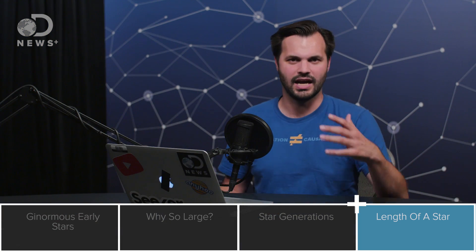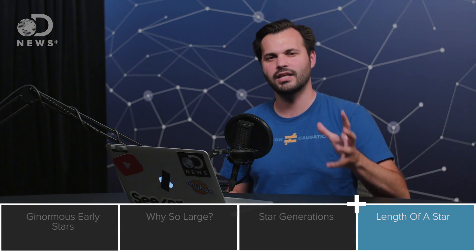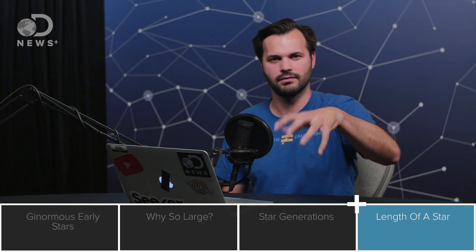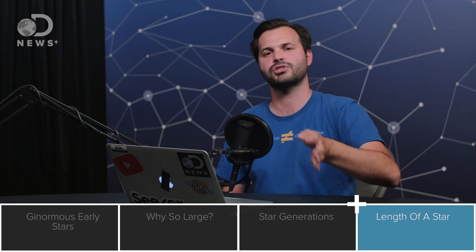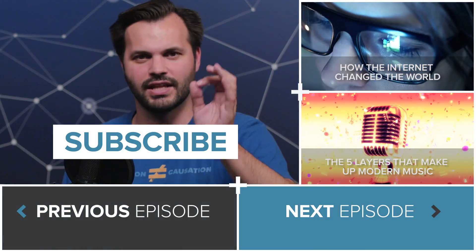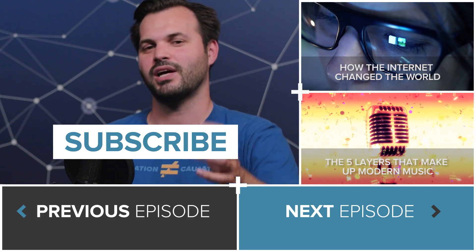Eventually everything is going to die, even stars. So now that you know how they're born and how to pull them together into different types over the life cycle of our universe, let's talk about how stars die and what happens to them tomorrow. Make sure you come back for that. Subscribe so you get all the episodes of DNews Plus in this series.